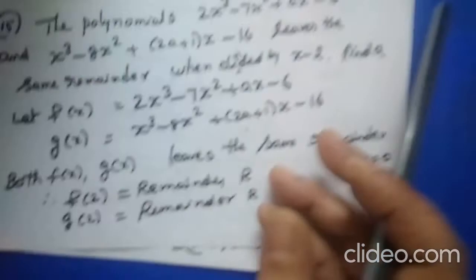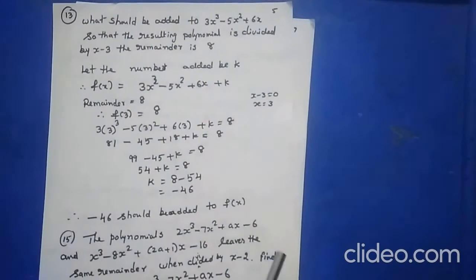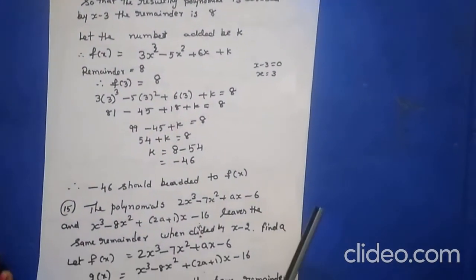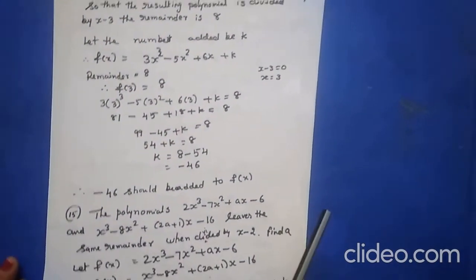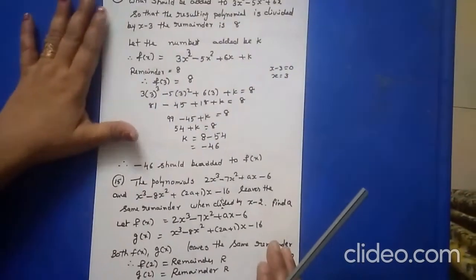To summarize: using the Factor Theorem, if x - a is a factor, the remainder is 0. If a specific remainder is given, you equate f(a) to that remainder value.